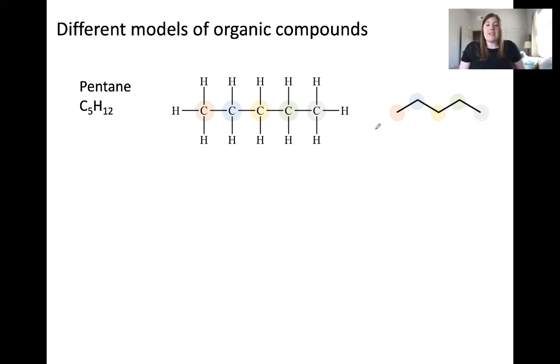So in the case of these end carbons, the orange and the gray, each one of those carbons is bound to one other carbon and three hydrogens. In the case of the blue, yellow, and green circles, those carbons are each bound to two other carbons as well as two hydrogens.